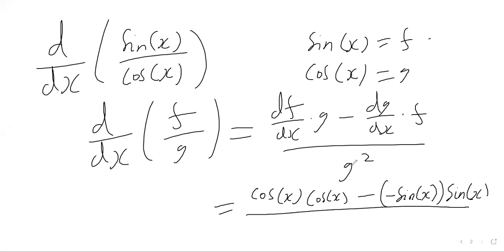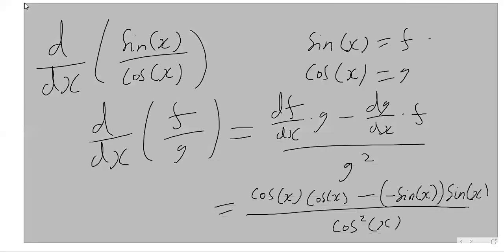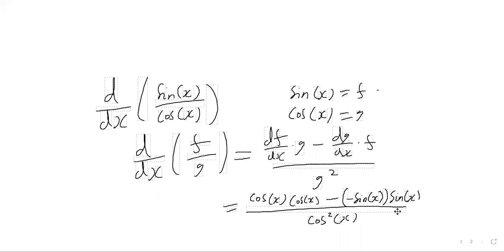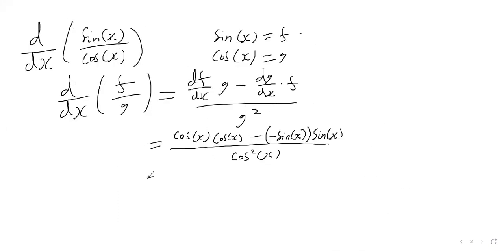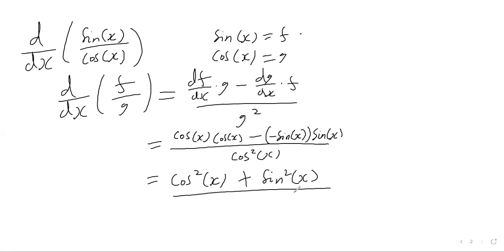This is all divided by g squared, which is cos squared on the bottom. Simplifying: cos times cos is just cos squared of x. Then we subtract negative sine of x times sine of x, which becomes positive sine squared. This is all divided by cos squared of x.